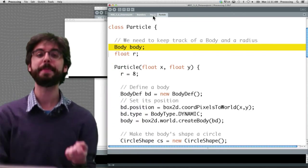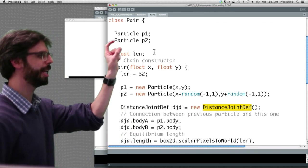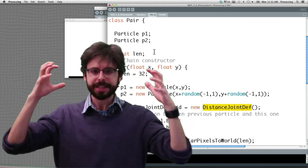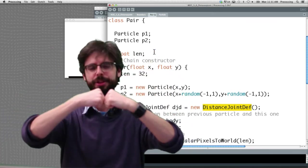This particular example does something like that, and what it does is it has a pair class, and the pair class has two particle objects in it. The pair is an object that stores all the information related to two particles and the joint that connects them.